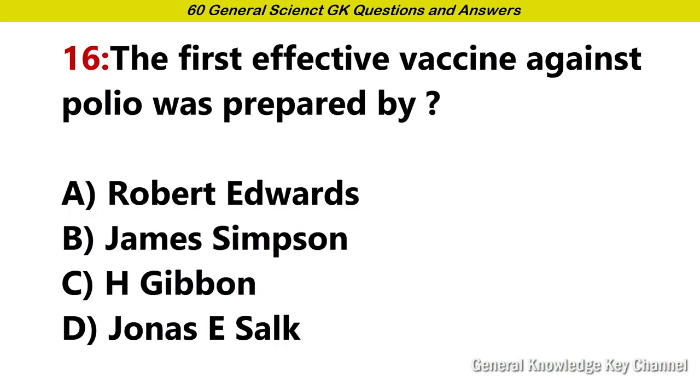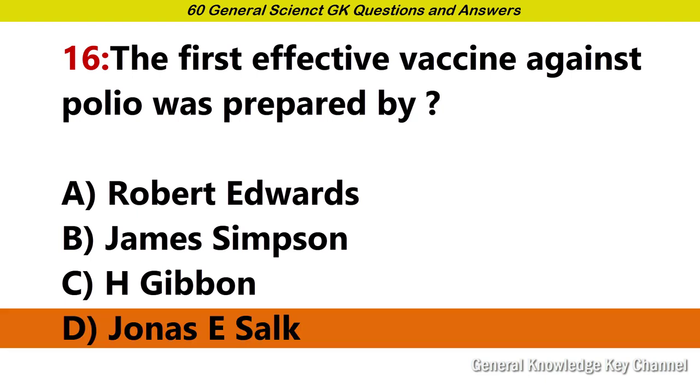The first effective vaccine against polio was prepared by? Answer D. Jonas E. Salk.